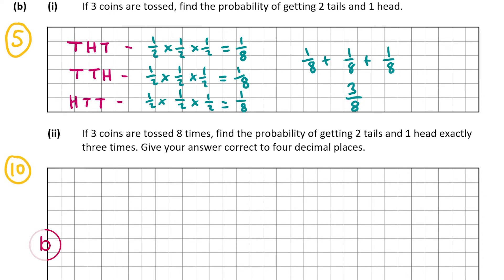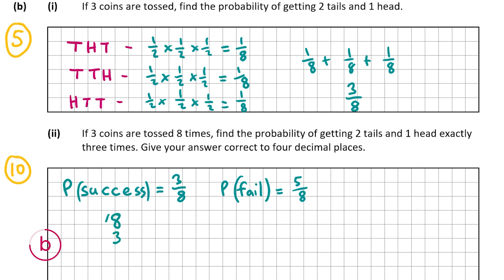Part B2 is worth 10 marks. It says: if three coins are tossed eight times, find the probability of getting two tails and one head exactly three times, correct to four decimal places. I'm going to use a Bernoulli trial. The probability of success — getting two tails and one head — was worked out in B part 1 as three over eight (3/8). The probability of failure is one minus 3/8, which is 5/8. A failure here means not getting two tails and one head.